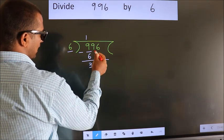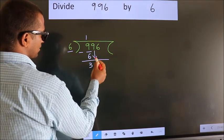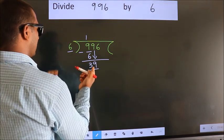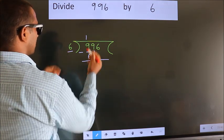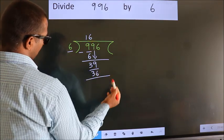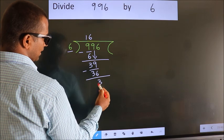After this, bring down the beside number. So 9 down. So 39. A number close to 39 in 6 table is 6 6 36. Now we subtract. We get 3.